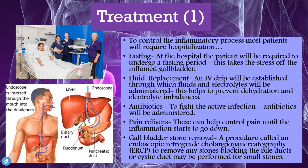How does one treat cholecystitis? To control the inflammatory process, most patients will require hospitalization. The first thing done at the hospital is asking the patient to start fasting. This takes the stress off the inflamed gallbladder, because the gallbladder is stimulated the moment we intake any sort of food. Fasting gives the gallbladder a chance to rest and settle down. We can also do fluid replacement therapy in the form of an IV drip.